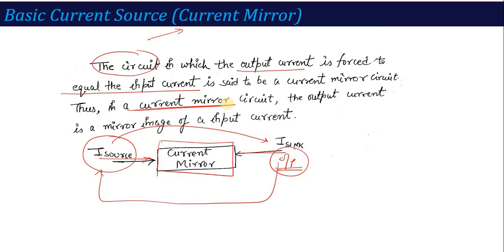In this current mirror circuit there is a very important advantage: by using this circuit we can replicate our input side current to the next level. That's why we use this current mirror circuit in a long circuit where we have a particular DC current and we need to supply that particular value to the circuit at different locations. Remember: current mirror is a circuit where the output current is equal to the input current.